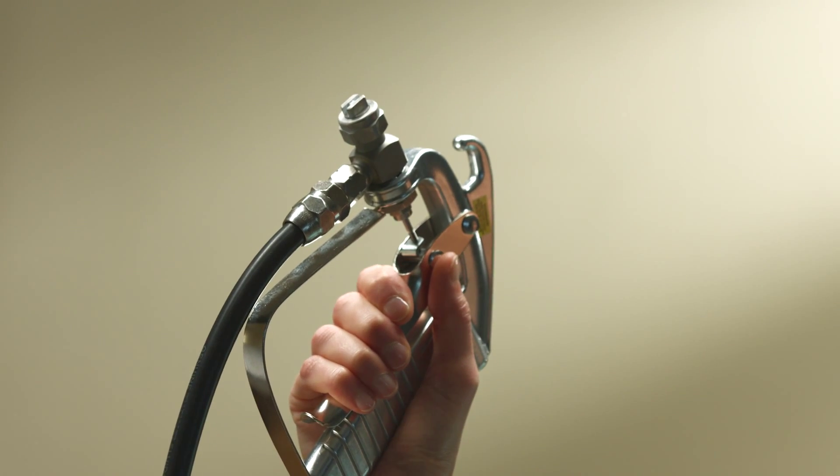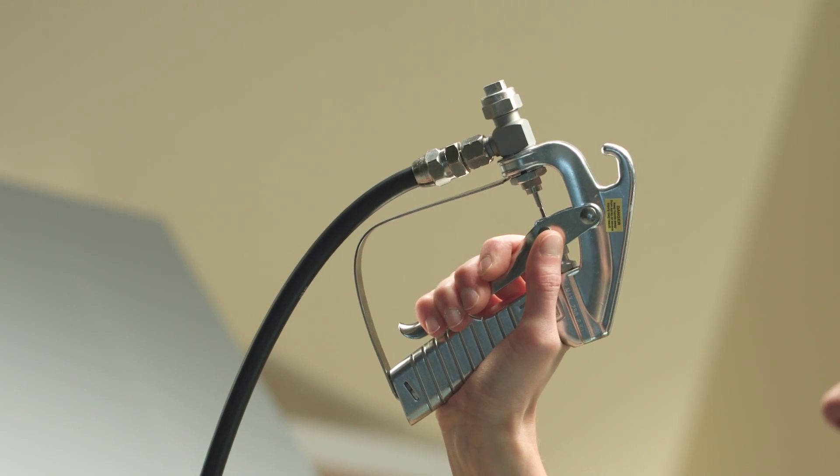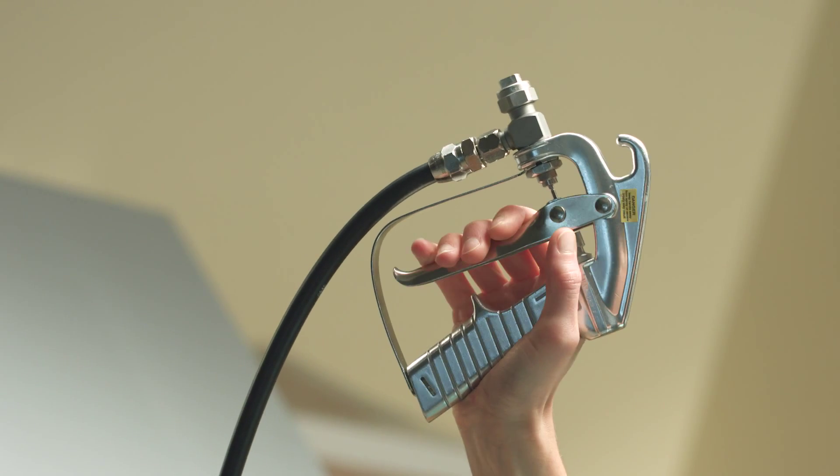To clear the hose and spray gun, hold the spray gun over your head. When the trigger is pulled, the remaining dispersion will drain into the pressure tank.